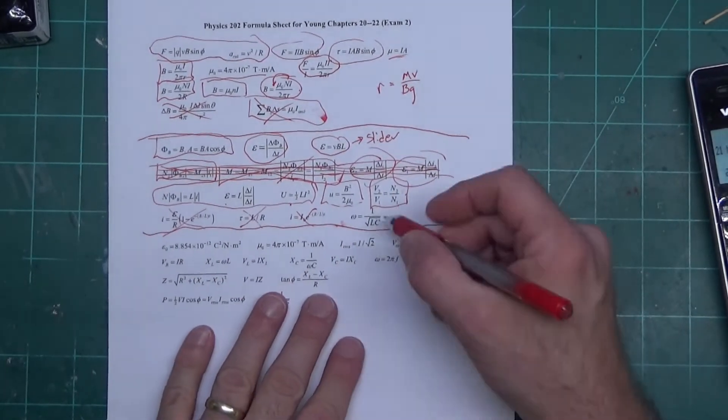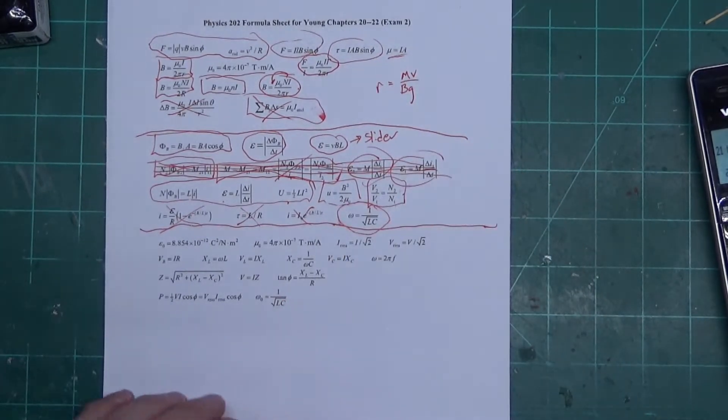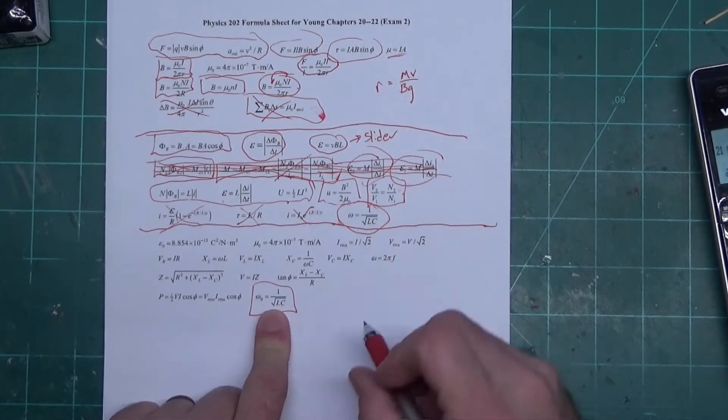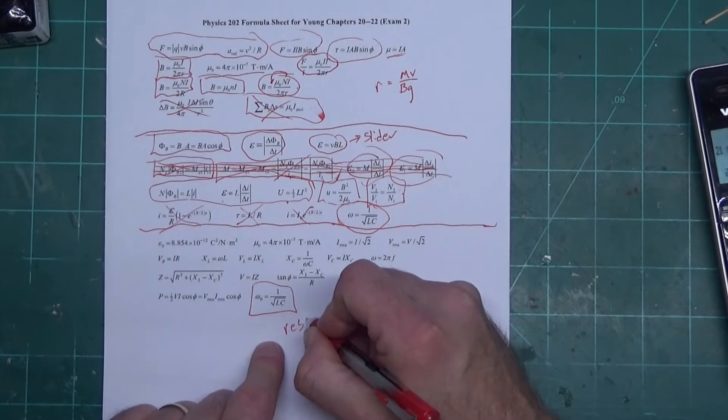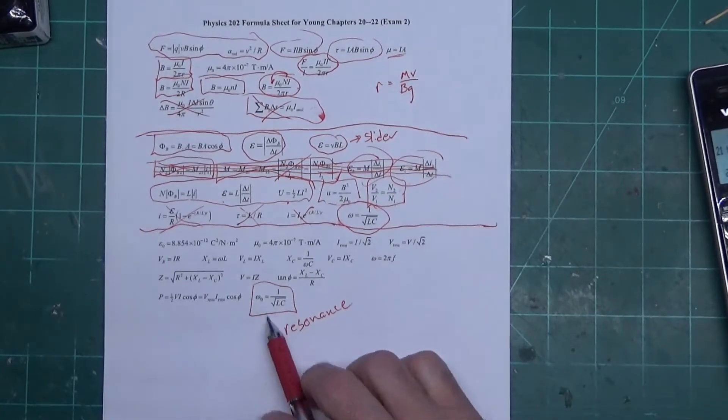This is the frequency of the oscillations between an inductor and a capacitor. Notice it's down here as well - the same two equations. That's because this one right here is resonance frequency, which we're going to talk about in a second.